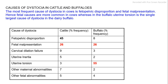Causes of dystocia in cattle and buffaloes: The most frequent cause of dystocia in cows is fetopelvic disproportion and fetal malpresentation; fetal causes are more common in cows. In the buffalo, uterine torsion is the single largest cause of dystocia. Comparative frequency: fetopelvic disproportion — cattle 45%, buffalo 8%; fetal malpresentation — 26% in both; cervical dilation failure — cattle 9%, buffalo 3%; uterine inertia — cattle 5%, buffalo 2%; uterine torsion — buffalo 35%; other maternal abnormalities — cattle 7%, buffalo 2%.